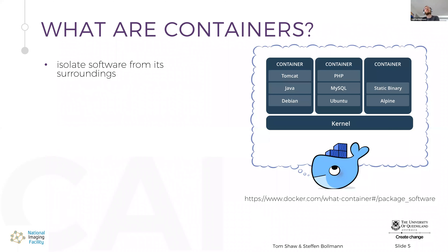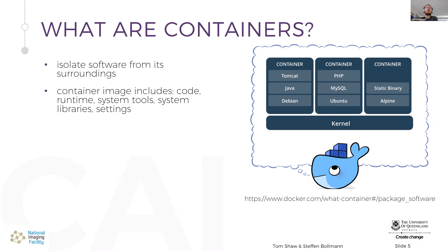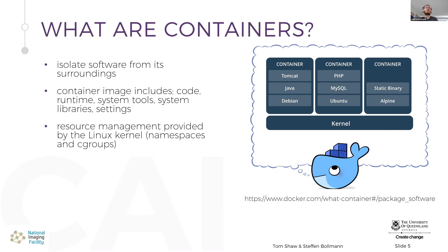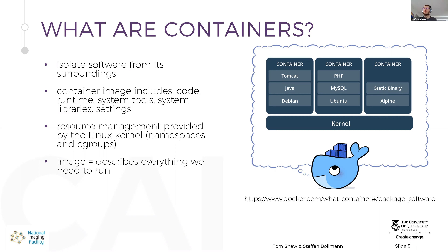So what does that mean? Containers are meant to isolate software from its surrounding operating system. Container images include code, the runtime, system tools, system libraries, all the settings — and we can store and distribute this image to our computers. Resource management is provided by the Linux kernel through namespaces and cgroups, which allow us to run a little virtual machine on a computer. An image describes everything we need to run — basically the files of this little computer — and a container is the running instance of that.